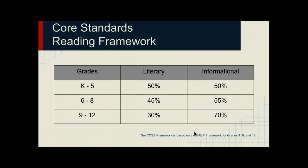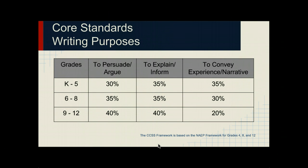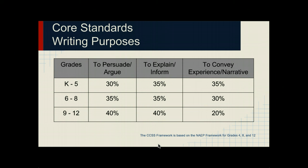One question to ask yourself is: right now as an adult, what balance do you have — what percentage of your life is spent reading literary texts as opposed to informational texts? Remember that the impetus for the Common Core is to ensure students are both career and college ready. In most careers and college experiences — except perhaps if you're going to be an English major — students will be reading more informational texts than anything else. And as adults, we probably read more informational texts than anything else.